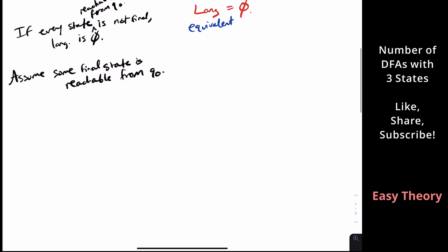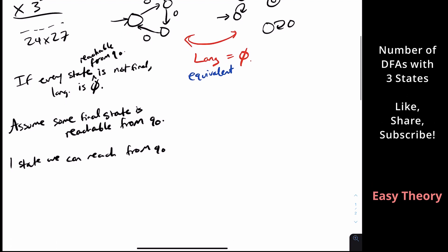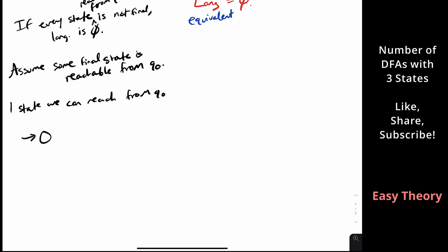Let's say we can only reach one state from q0 — that's just q0 itself. Because there's only one state reachable from q0, the other two states don't matter, and we must have a self-loop. That gives only two possible DFAs here: the first has language equal to the empty set, and the second — where q0 is final — has language sigma star, because it accepts everything.